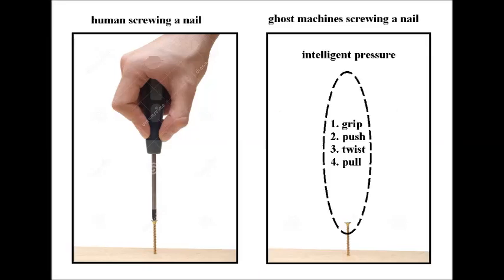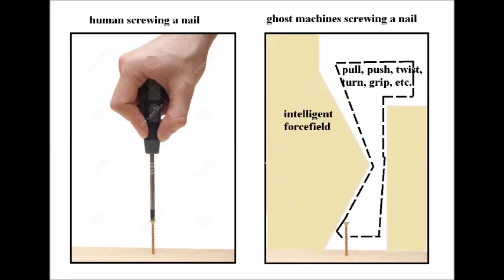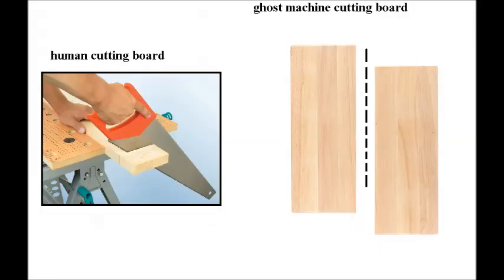If a goal is to screw a nail, a ghost machine has to do this according to the empty space available. An intelligent force field can come in different sizes and shapes and can perform hold, grip, push, twist, and pull actions. The ghost machine can also cut a board in half using lasers to break apart individual molecules, or alternatively build a knife out of metal particles and use intelligent pressure to move the blade. Two separate boards can also be molecularly combined. With these elemental actions, ghost machines can do anything.